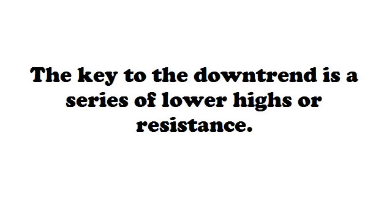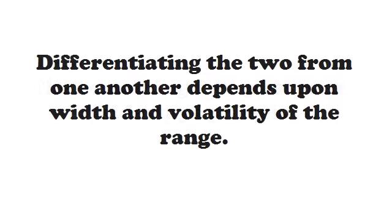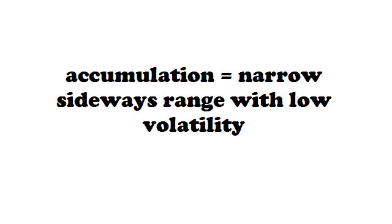So there are four phases. Two of them are trends, which we've just discussed. The other two are sideways phases where there is no dominant bullish or bearish psychology, and therefore we're stuck in some sort of range. Depending upon the width and volatility of the range, you end up with one of two different phases. You have accumulation on one hand, which is a narrow sideways range, usually lower in volatility — often referred to as consolidation.